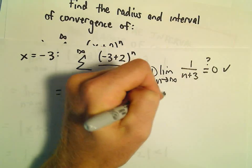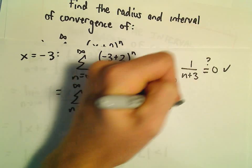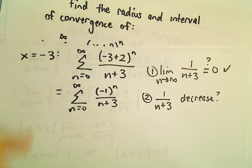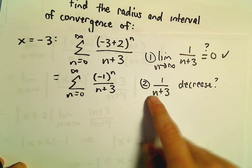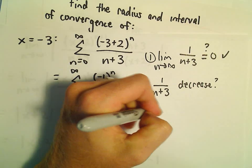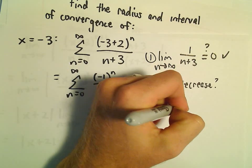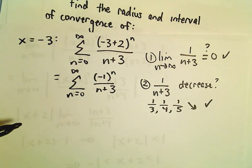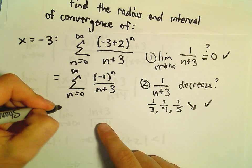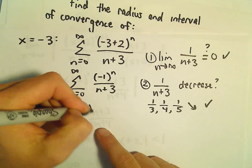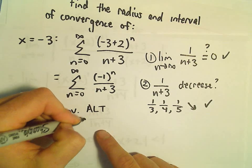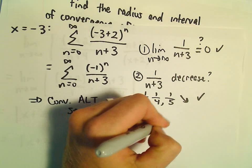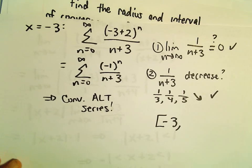The second thing we have to check is whether 1 over n plus 3 decreases. Plugging in n equals 0 gives one-third, then one-fourth, then one-fifth, and so on — those are clearly getting smaller. That tells us this is a convergent alternating series, so negative 3 is included in our interval of convergence.